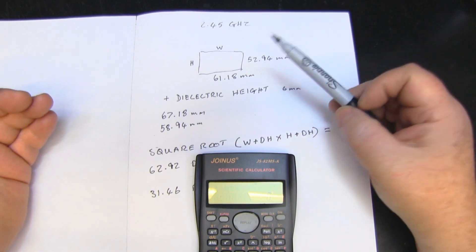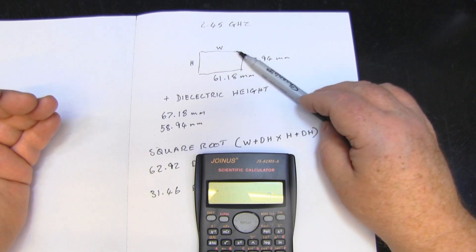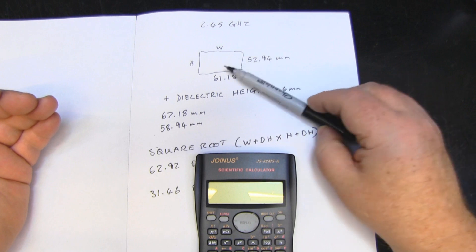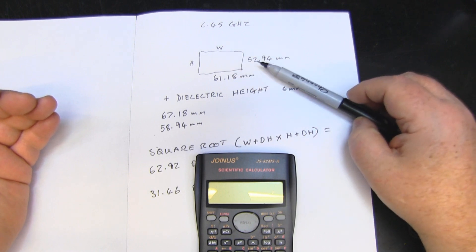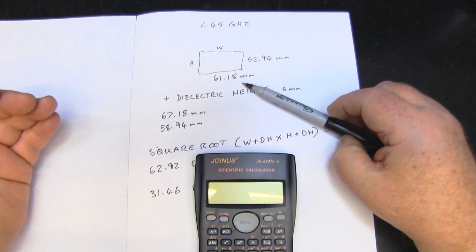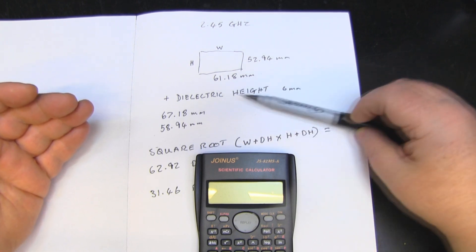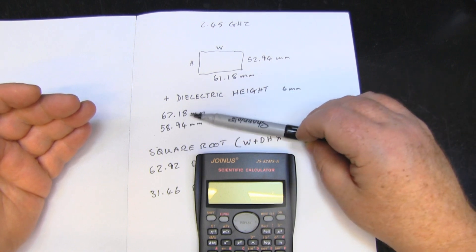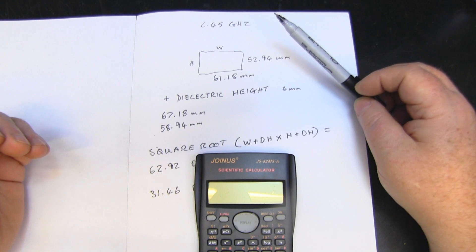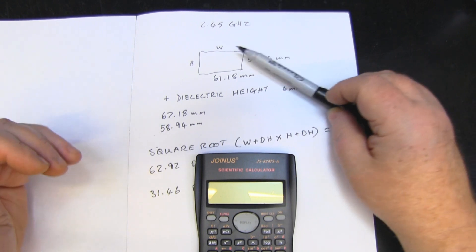Use your favorite online calculator for a patch antenna - I'll link to below. I've built one here for 2.45 gigahertz for Wi-Fi. These are my measurements: the height is 52.94 and the width is 61.18 millimeters. You've got to add the dielectric height into those two figures - that's the distance between the reflector and your main driven element.